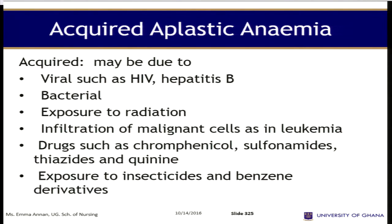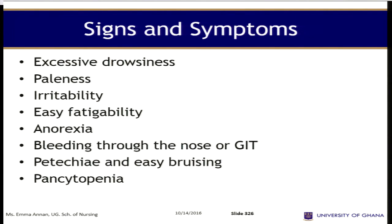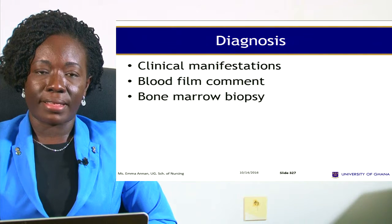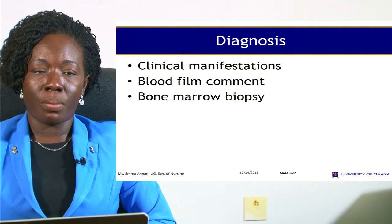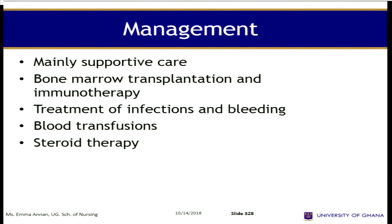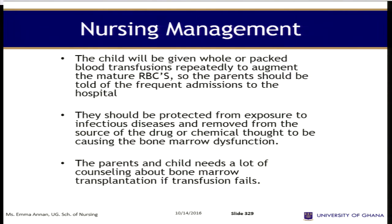Exposure to radiation and certain drugs such as chloramphenicol and sulfonamide can also cause aplastic anemia. Signs and symptoms include excessive drowsiness, paleness, irritability, the child easily gets tired, anorexia, bleeding through the nose or gut, easy bruising, and pancytopenia. Diagnosis is by clinical manifestation, blood count, and bone marrow biopsy. Management is mainly supportive care, bone marrow transplantation, immunotherapy, treatment of infections and bleeding, blood transfusions, and steroid therapy.